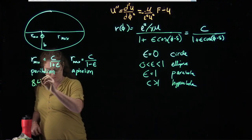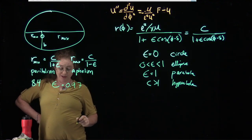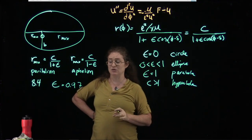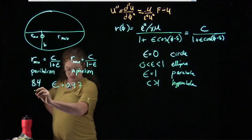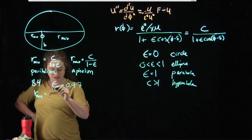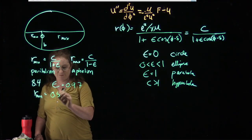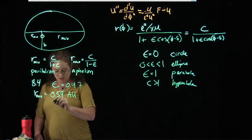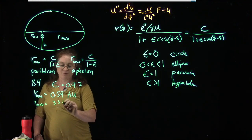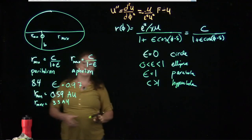Example 8.4: Halley's Comet has an eccentricity of 0.97 — a rather large value. For a bound elliptical orbit, ε must be less than one, so it's barely bound. The closest approach to the sun works out to be 0.59 astronomical units, and the farthest distance is 35 astronomical units. This is an extremely eccentric orbit, just barely bound around the sun.